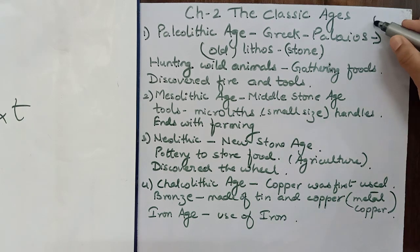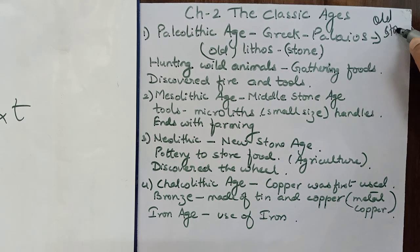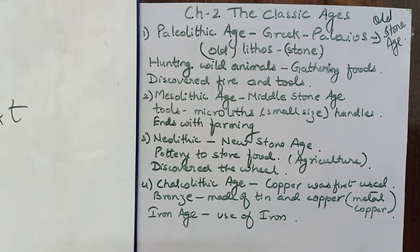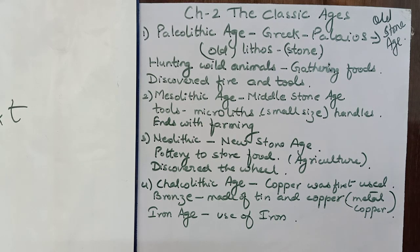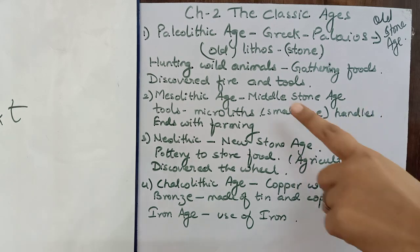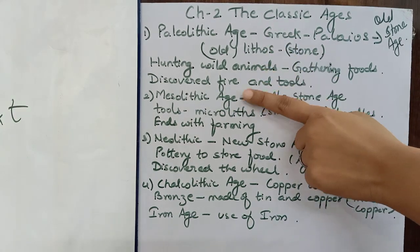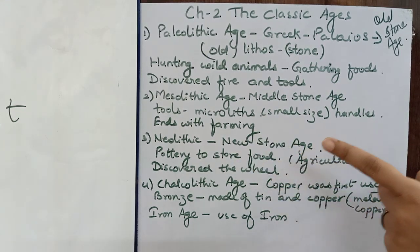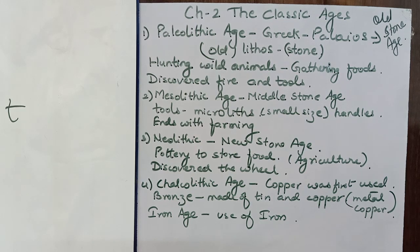What do we call classic ages? Old stone age. Now why did we call it old stone age? Because this classical ages was divided into 4 periods. The first is Paleolithic age, the next is Mesolithic age, the next is Neolithic age and the fourth is Chalcolithic age.